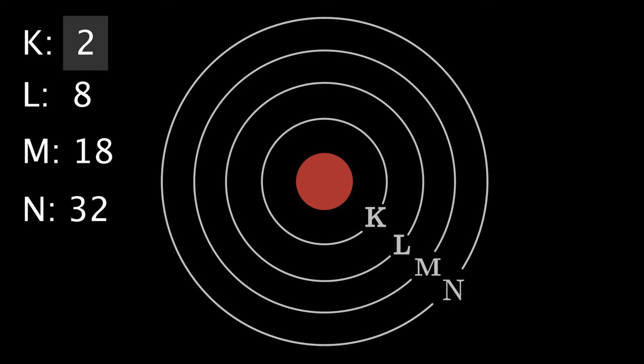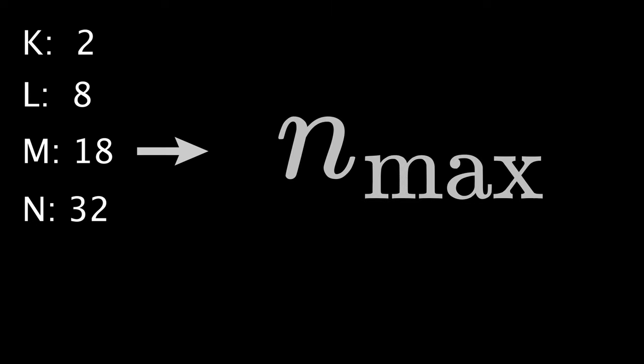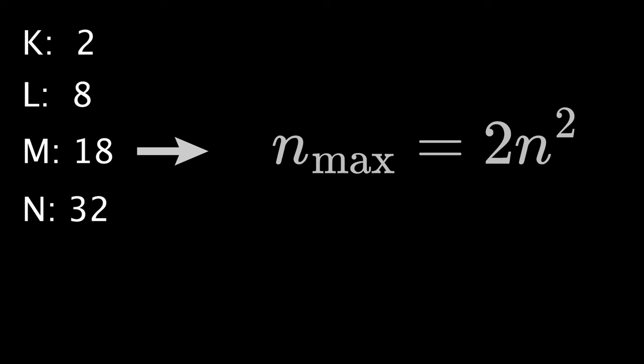How do I know the maximum number of electrons a shell can hold? There is a formula for this. Let's call the maximum number of electrons that a shell can hold as N-max. You can then calculate this number using the following formula. N-max is equal to 2N-squared, where N is the shell number.